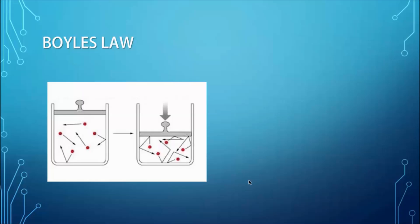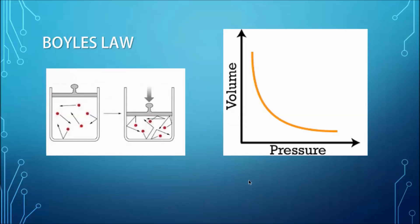That's where we get the inverse proportionality: volume goes down, pressure goes up; if pressure goes down, volume goes up. Here we have a graph which depicts that — as volume decreases on the y-axis, pressure increases to the right on the x-axis. Mathematically, we can write this as P is directly proportional to 1 over V, or simply P = 1/V.